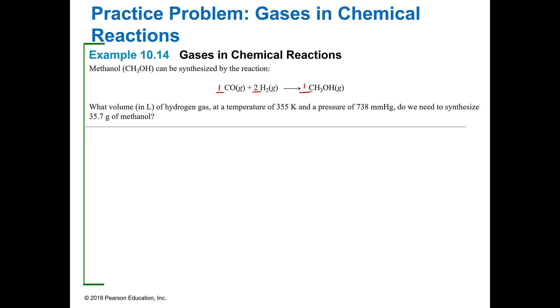I'm going to take my inventory. I have a pressure of 738 millimeters of mercury, and I'm going to convert that to atmospheres, which gives me 0.968 atmospheres. My temperature is in Kelvin already, 355 K. My R is always the same. Now I'm trying to figure out volume. The volume in liters of a gas at 355 K, 738 millimeters of mercury, and I have 35.7 grams of methanol.